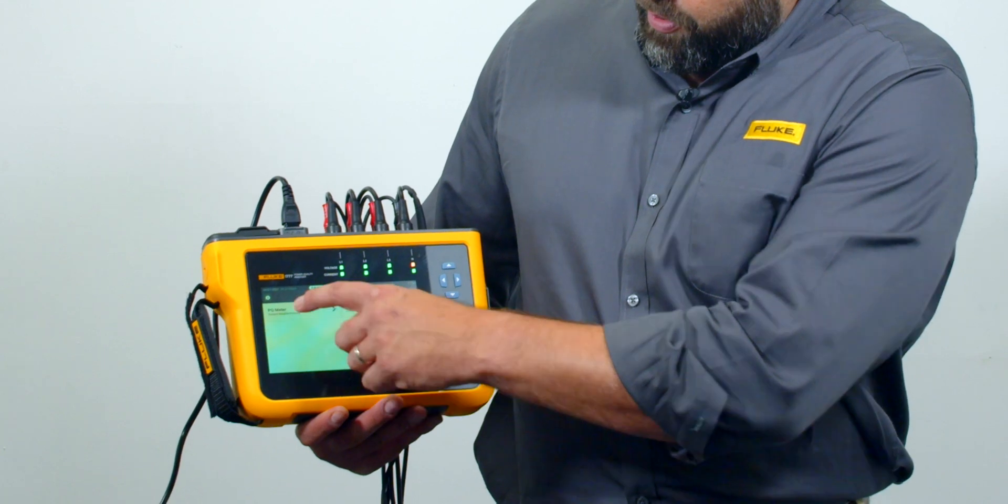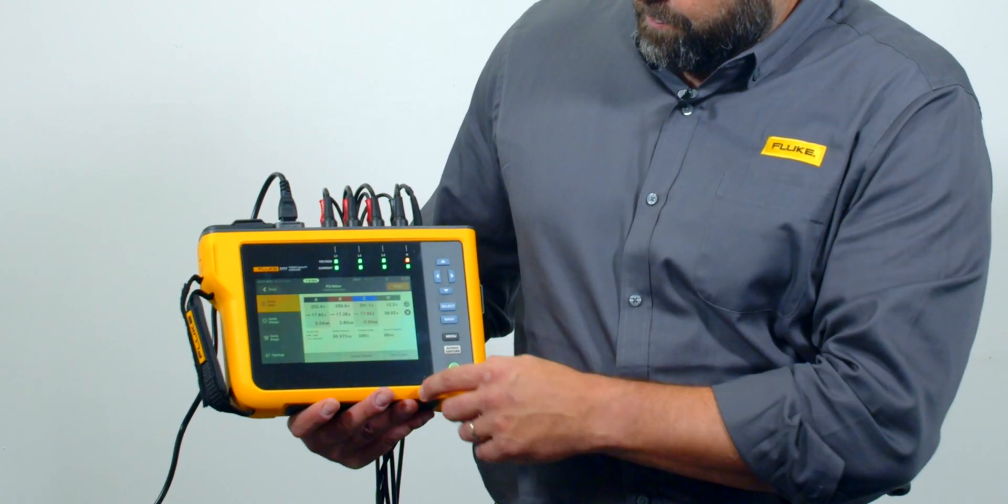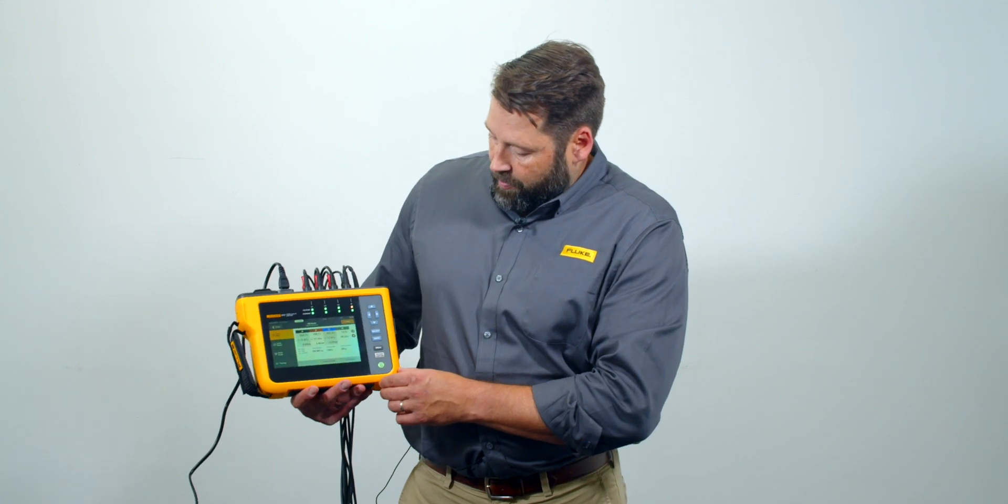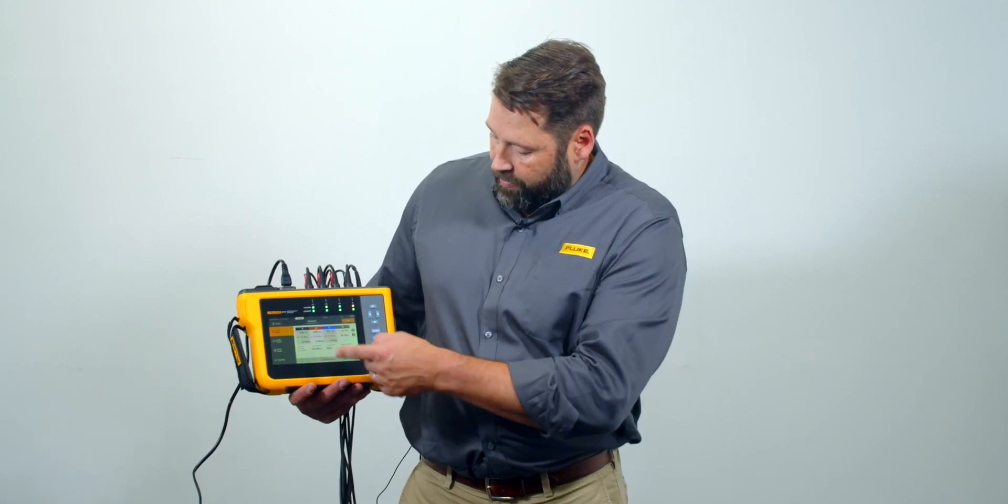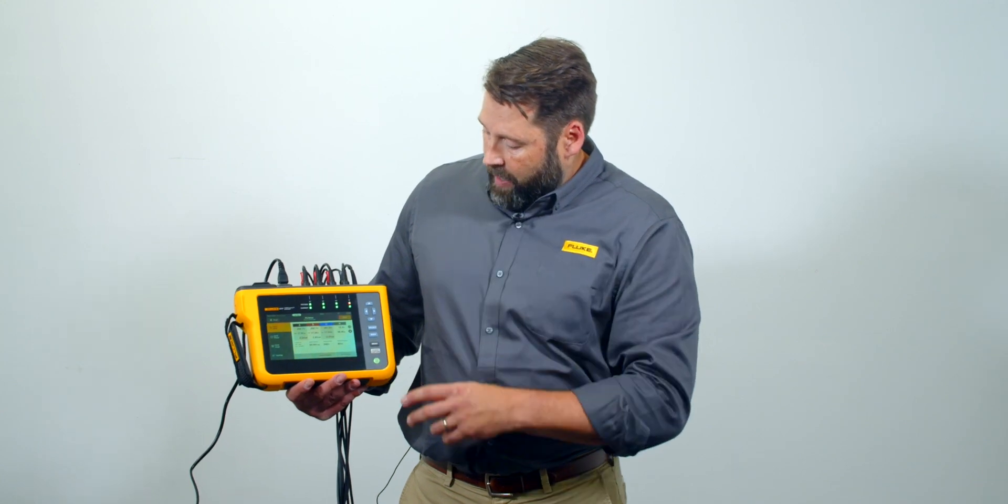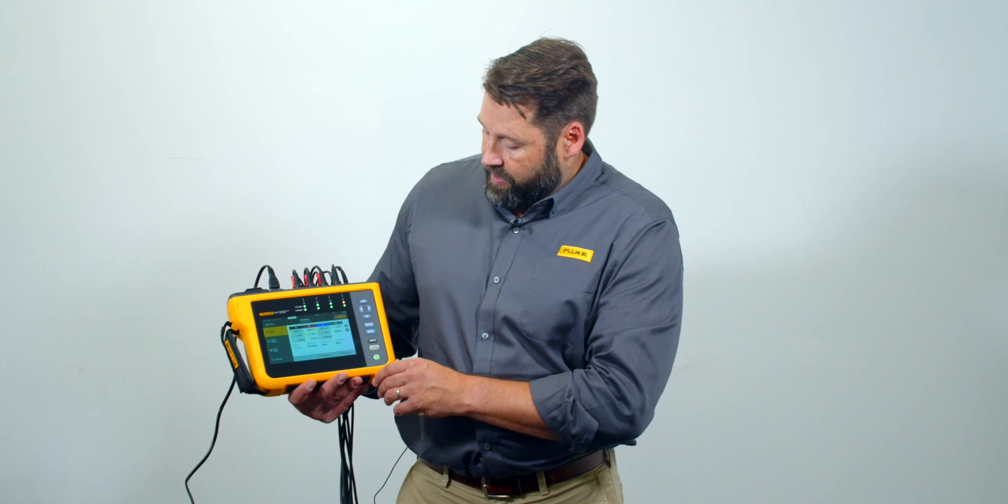If I go in here to PQ meter mode I'm seeing now live readings. I've got this hooked up to a demo board. We're just getting live readings on a three-phase circuit. So I'm looking at volts, amps and hertz. There's a couple nice things about this feature. I can look at this live or I can record data anytime I want.